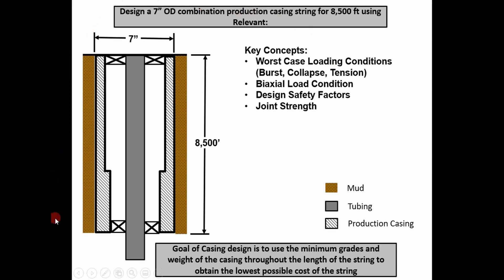This shows a 2D representation of what a casing string consists of. You've got drilling mud on the outside, you've got the production casing which we're designing, and you've got production tubing on the inside of the casing. Usually in the annulus, you have completion fluid.